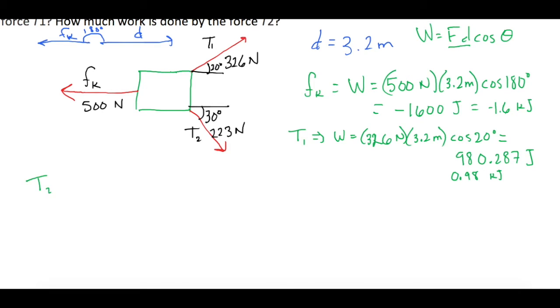For T2, work equals the force of 223 newtons times the distance of 3.2 meters times the cosine of 30 degrees. That gives us 617.99 joules or 0.618 kilojoules.